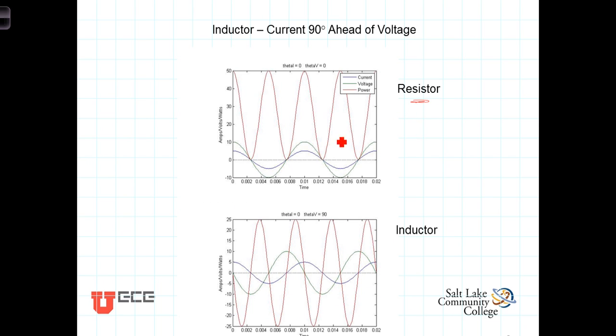Here's our graph of the instantaneous voltage times the current and the instantaneous power in a resistor. Unlike a resistor, in an inductor, good old Eli, the voltage leads the current by 90 degrees. So theta i is zero, theta v is 90, we have the situation where they are no longer synchronized. And the multiplication of this times this gives us a sine wave that is oscillating at twice the frequency as the source itself.